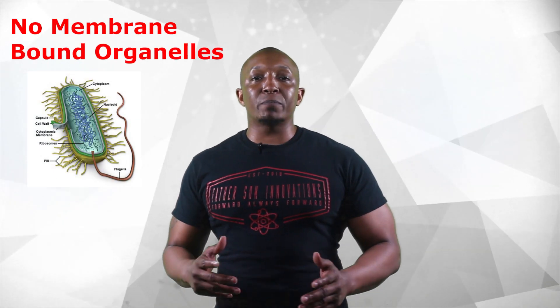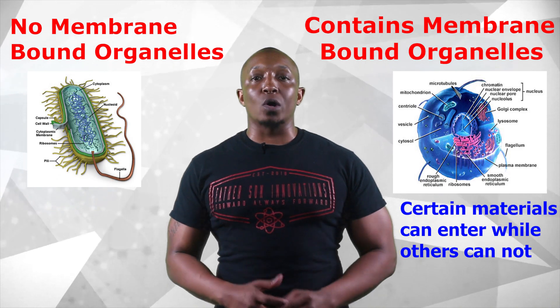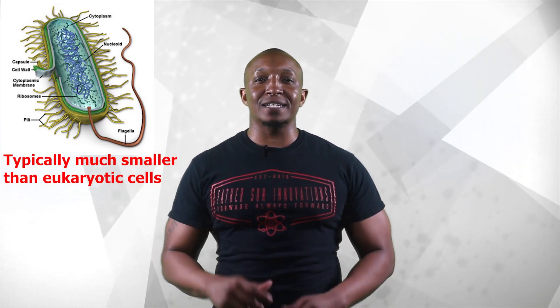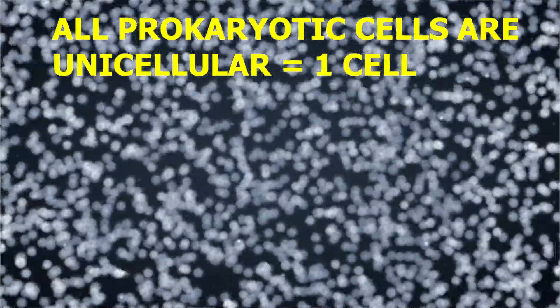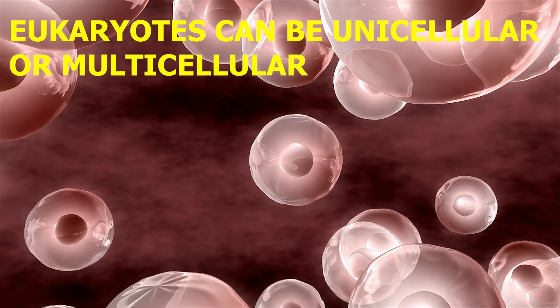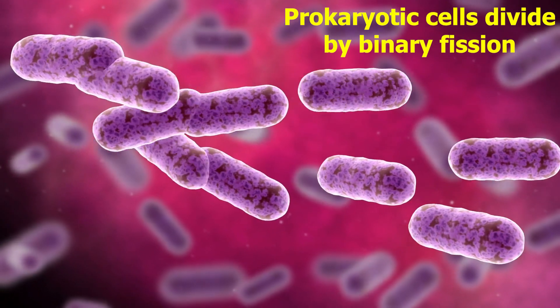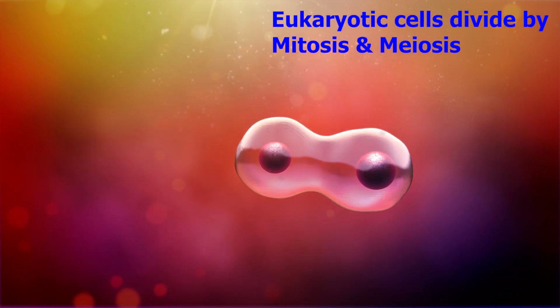Fourth, prokaryotes do not have membrane-bound organelles, while eukaryotes do. This means that certain materials are allowed to enter eukaryotic cell organelles and others are not. Fifth, prokaryotic cells are typically much smaller than eukaryotic cells. This is also due to the fact that all prokaryotic cells are unicellular, meaning they only contain one cell, while eukaryotes can be unicellular or multicellular. Sixth, prokaryotic cells divide by binary fission, which is basically making copies of themselves, while eukaryotic cells divide by mitosis and meiosis.